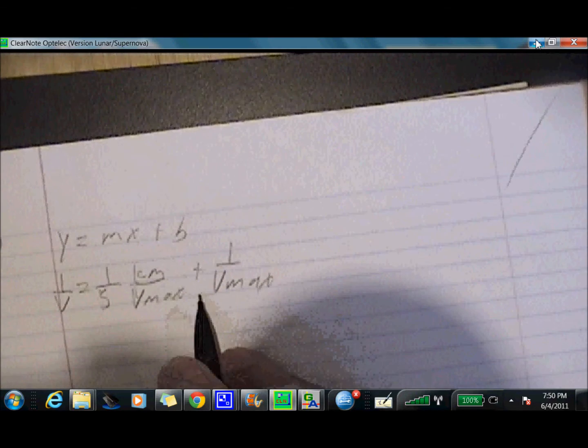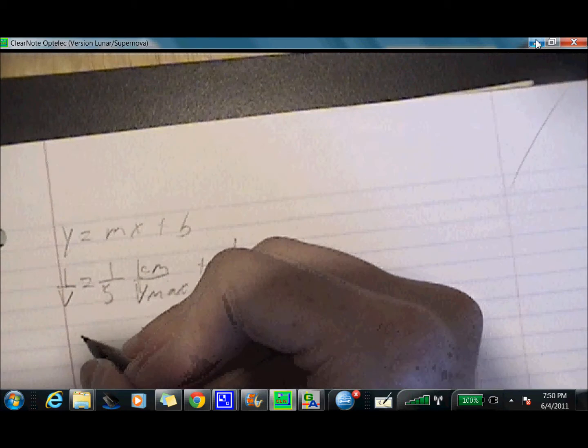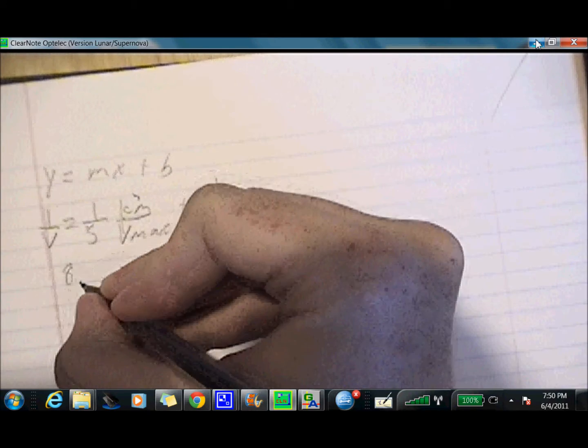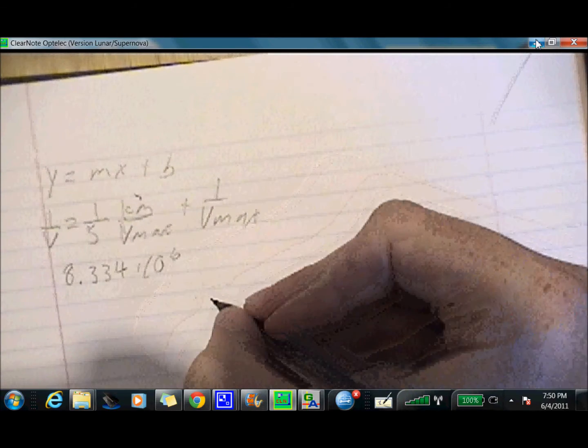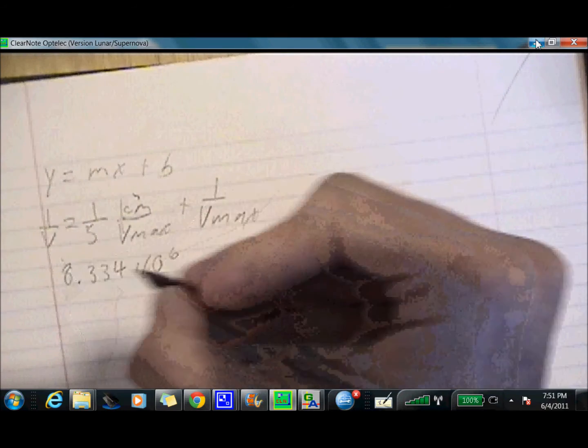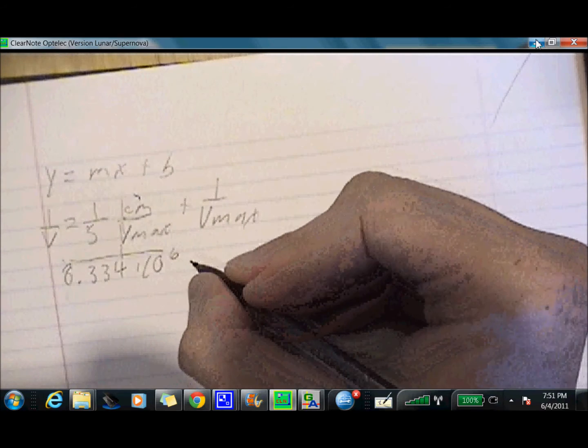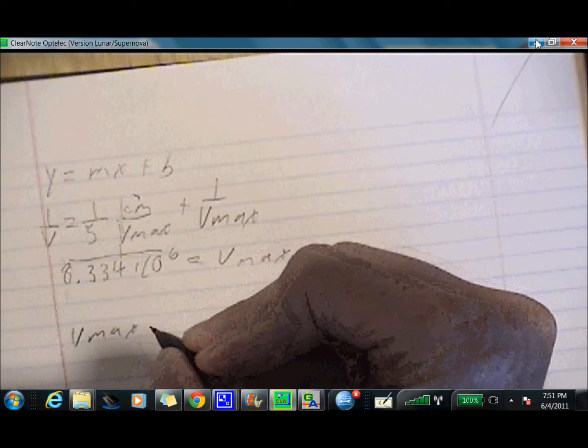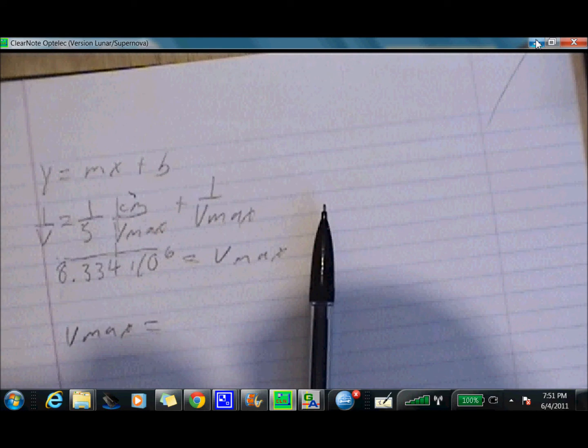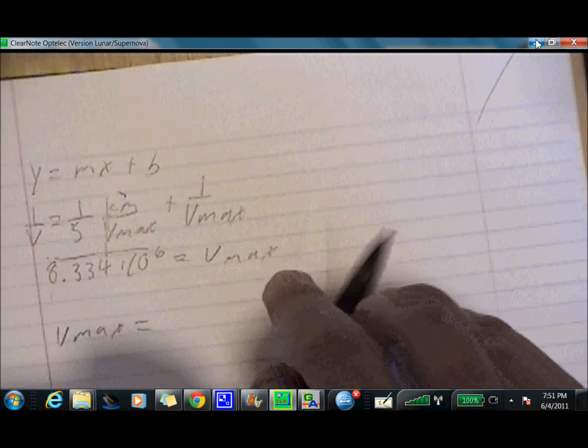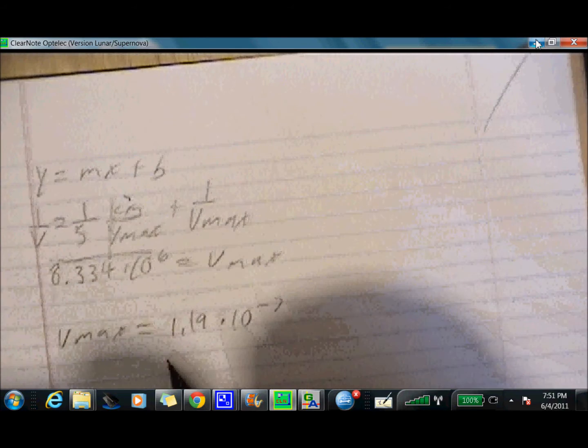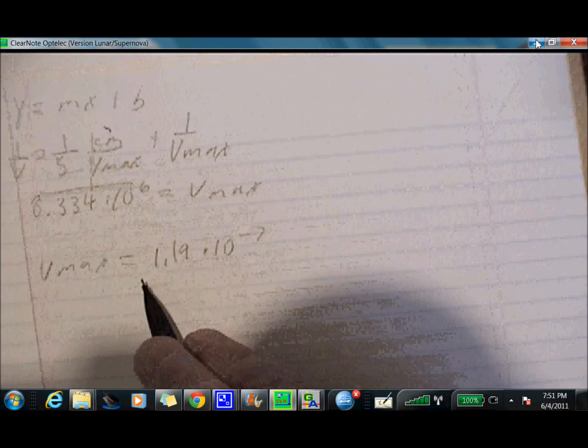So the first part of this question asks us, what is KM and Vmax? So this is pretty easy to do. All we're going to do is we're going to take our Y intercept. So I'm sorry, which was 8.334 times 10 to the sixth. And we're going to divide it one by this number. And this is going to equal Vmax. So Vmax is going to equal 1.19 times 10 to the negative seventh. The book gives it as 120 times 10 to the negative ninth. Same number.